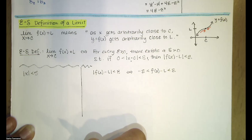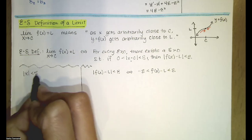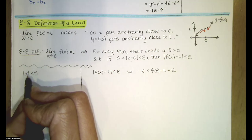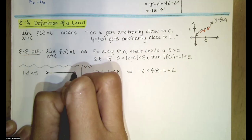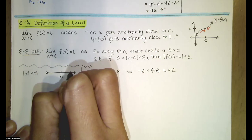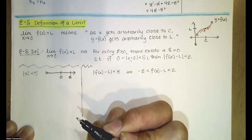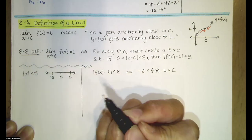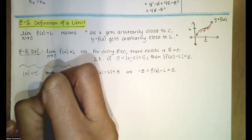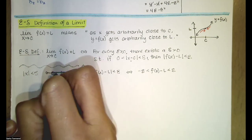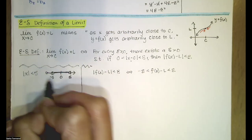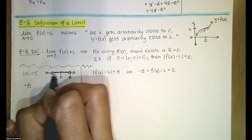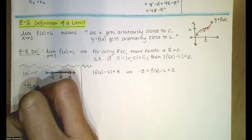To review: if we have the absolute value of x is less than five, we're asking which x values have a distance from zero less than five. All numbers between zero and five are less than five units from zero, and all numbers between negative five and zero are also less than five units from zero. So all x values satisfy that inequality — x must be between negative five and five.